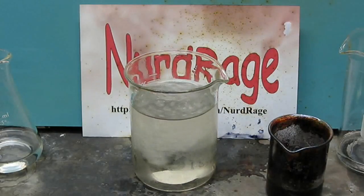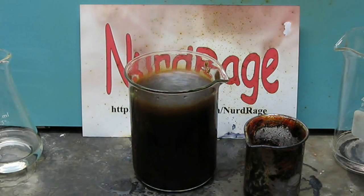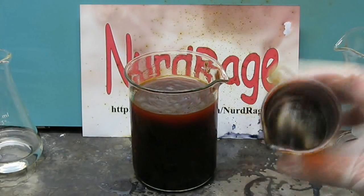Now using the same ice water bath, pour the black iodine slurry directly into it. The excess sulfuric acid will dissolve in the water but the iodine will precipitate out.